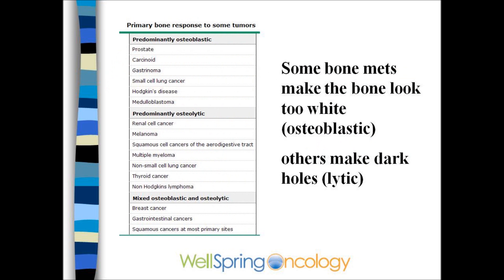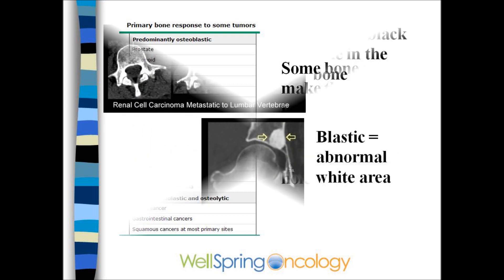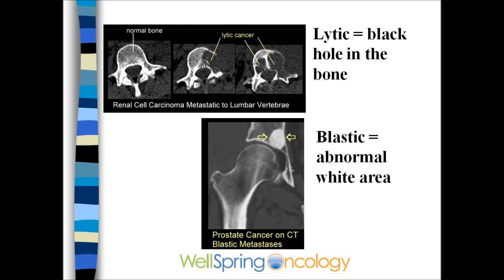If the bone looks abnormally white, it's called osteoblastic — this is common with prostate cancer. If the bone shows a black hole, it's called osteolytic — this is common for lung cancer. Breast cancer can be both blastic and osteolytic. Here's a picture of a lytic lesion, a black hole in the bone, and a blastic lesion, abnormally white.